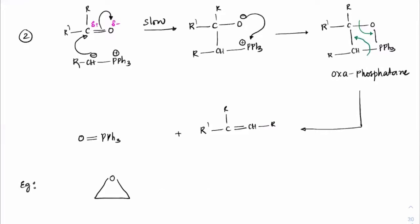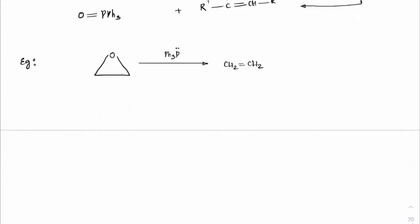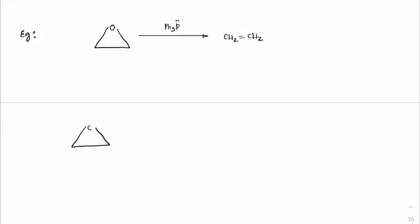Now consider: if you have an epoxide and treat it with Ph₃P (triphenylphosphine), the product is an alkene — CH=CH₂. P=O has very high bond energy, so wherever phosphorus gets an opportunity to bond with oxygen it forms a double bond. The mechanism: Ph₃P as a nucleophile attacks the epoxide carbon by SN2, breaking the C–O bond to give O⁻.